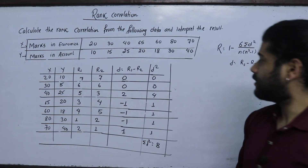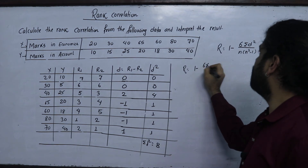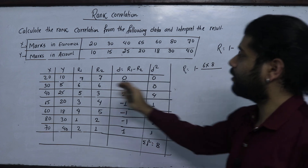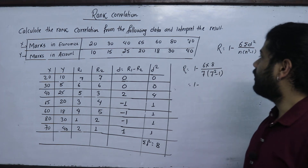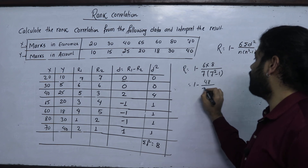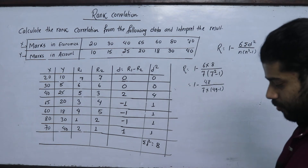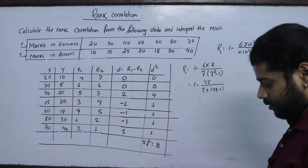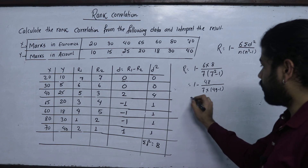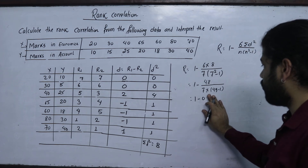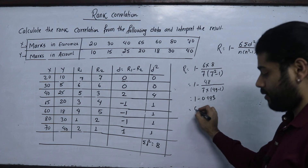Now we substitute into the formula. R equals 1 minus 6 times summation d-squared, which is 8, divided by n times (n-squared minus 1), where n = 7. So: 7 times (49 minus 1) = 7 × 48 = 336. Therefore R = 1 minus 48/336 = 1 minus 0.143, giving R = 0.857.